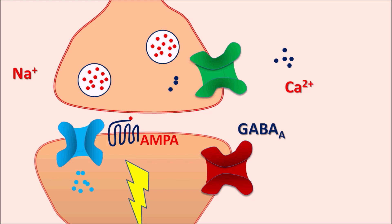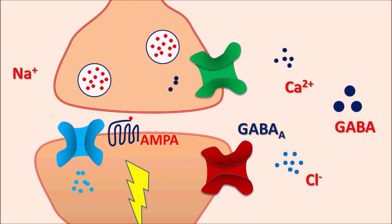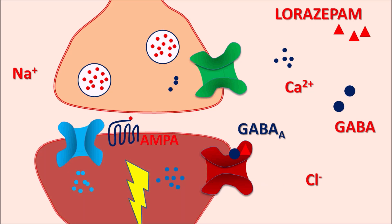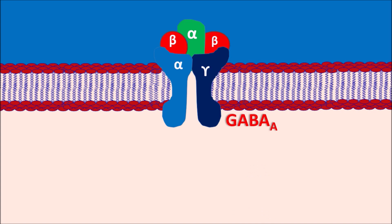GABA-A receptors are ionotropic receptors coupled with chloride channels. GABA is the inhibitory neurotransmitter within the CNS; it binds to GABA-A receptors, opening the chloride channels so chloride ions enter the membrane, resulting in an inhibitory response. However, in patients with anxiety and sleep disorders, this GABA response is not sufficient. In such conditions, lorazepam can be given. The GABA-A receptors on the post-synaptic membrane are ionotropic and pentameric in nature.